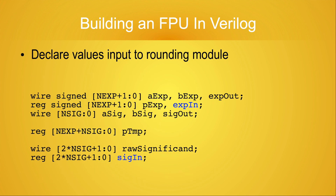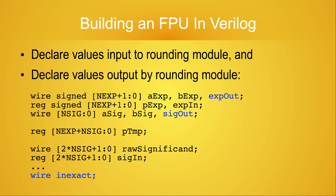As we've seen in previous videos, in addition to the rounding attribute, the rounding module requires the sign of the number being rounded, its exponent, and its significand. I covered how the sign of the product is computed in a previous video, so I won't be discussing its derivation here — I simply want to note that we already have the value available for our use. The rounding module outputs the exponent and significand for the rounded result and the inexact flag. Here, highlighted in blue, you can see the definitions for these three return values.